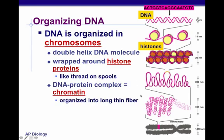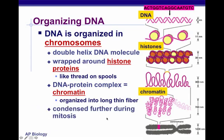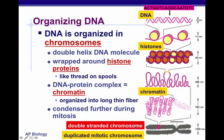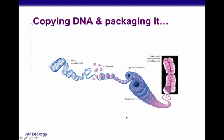The chromatin starts to coil and coil and coil. As we take those coils and compress them together, that's when we get our chromosome condensed further during mitosis. Here's the duplicated mitotic chromosome — it's double-stranded, with two strands connected at the centromere.